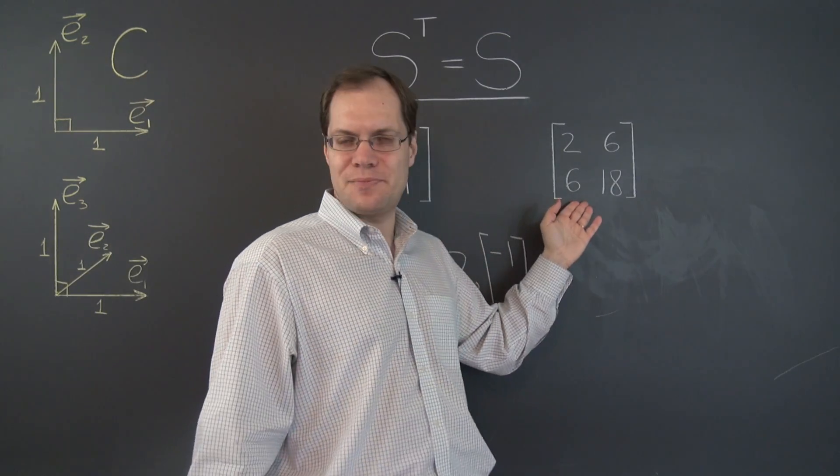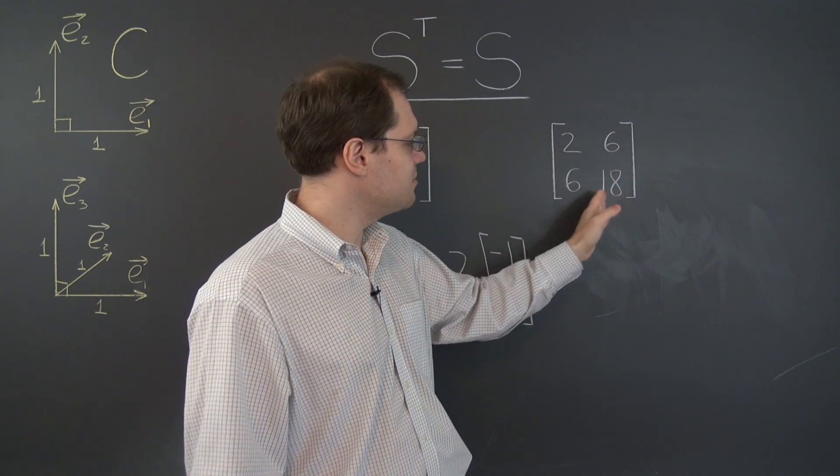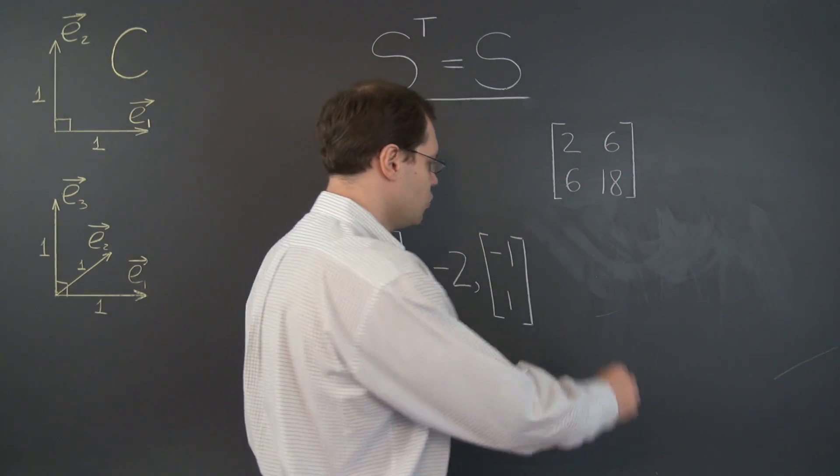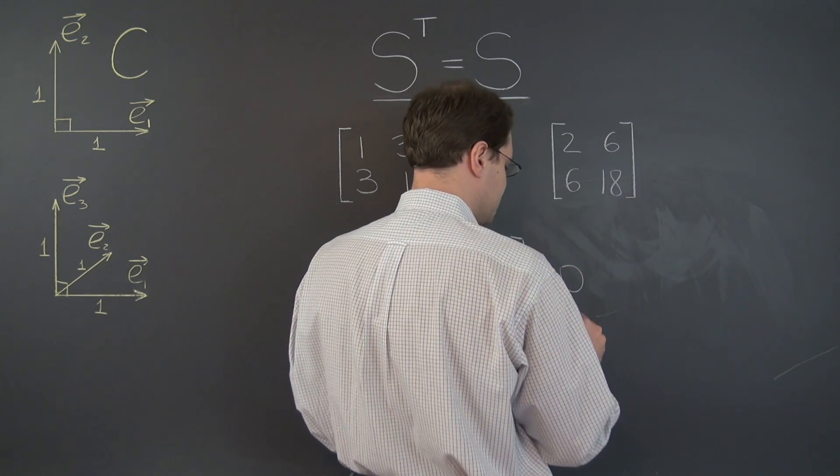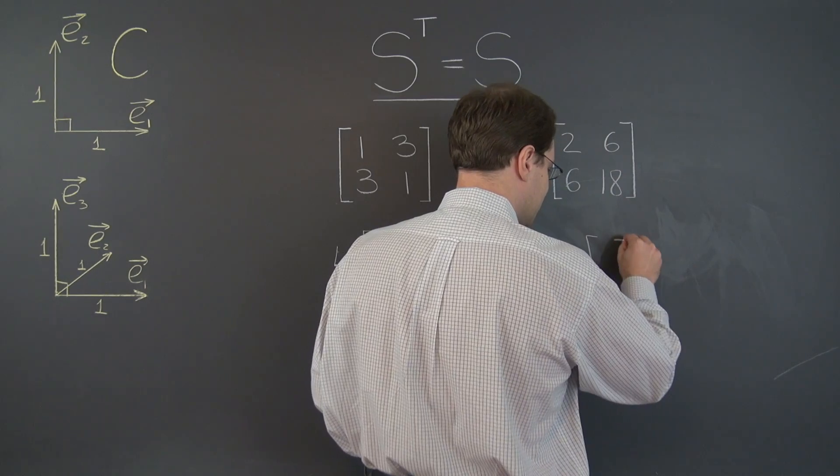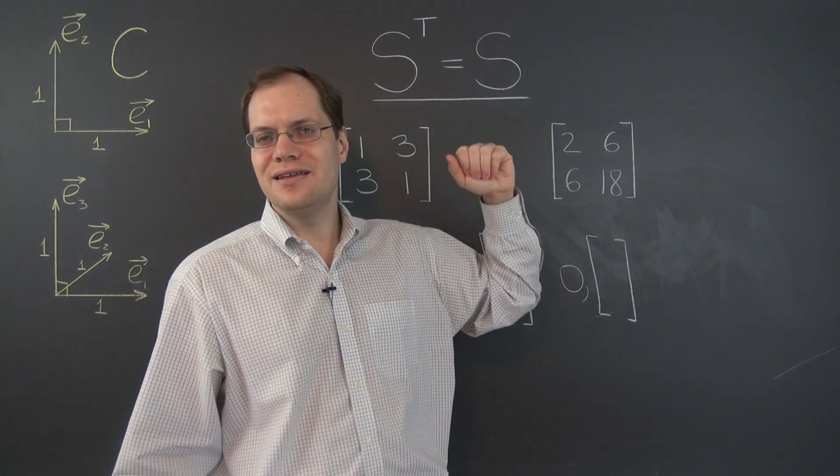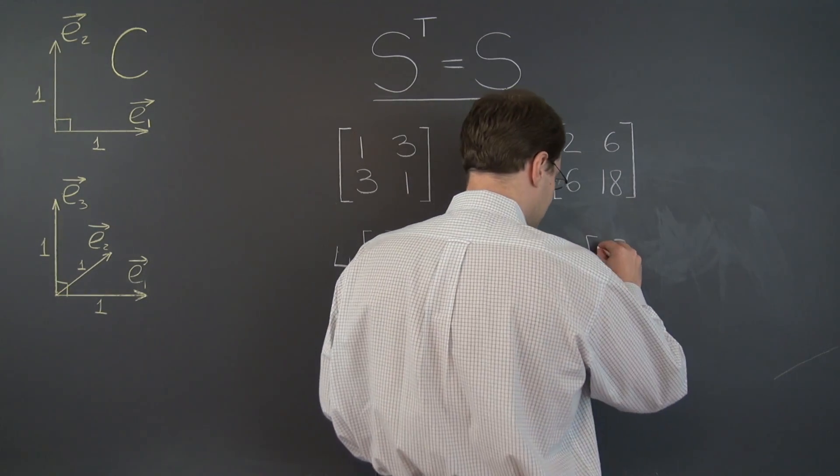And we'll do the same for this matrix. You will notice that this matrix is singular because this column is 3 times this column. So 0 is one of the eigenvalues and the corresponding eigenvector is any element of the null space. How about 3, negative 1? That's probably the simplest one.